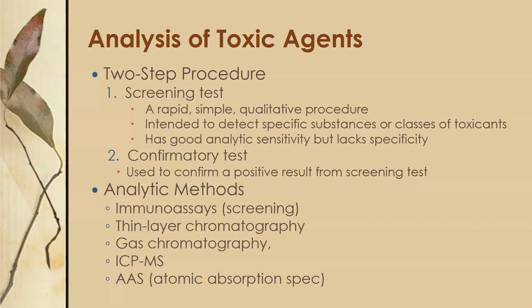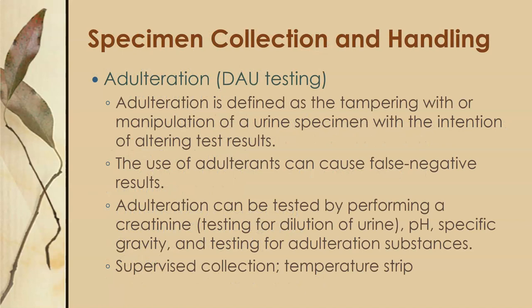These can be followed with a confirmatory test. The confirmatory testing is a lot more specific and is used to confirm a positive result from the screening test, or to get more specific on which drug within a class is actually present. The analytic methods often used in toxicology are immunoassays for screening, thin layer chromatography, gas chromatography, ICP mass spectrometry, and atomic absorption spectrometry.